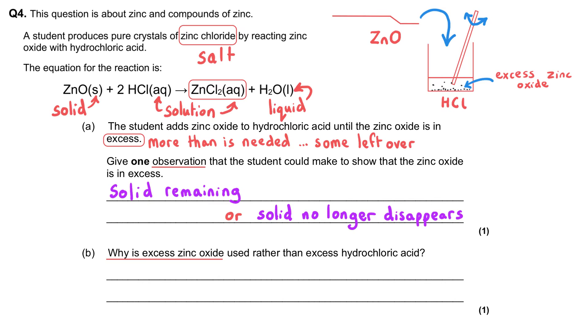In part B, why is excess zinc oxide used rather than excess hydrochloric acid? This comes down to the state symbols. The zinc oxide is a solid and the hydrochloric acid is aqueous. The zinc chloride crystals we are trying to produce are also aqueous. Our choice of chemical for the excess comes down to how easy it will be to remove that excess chemical once the reaction has finished.